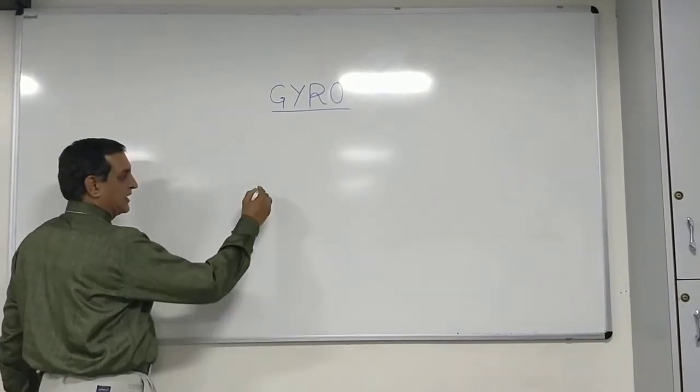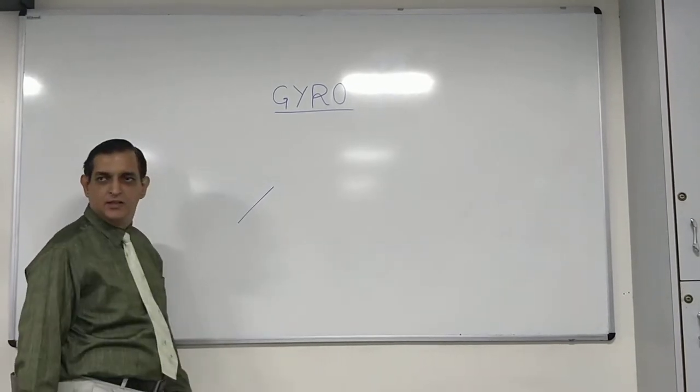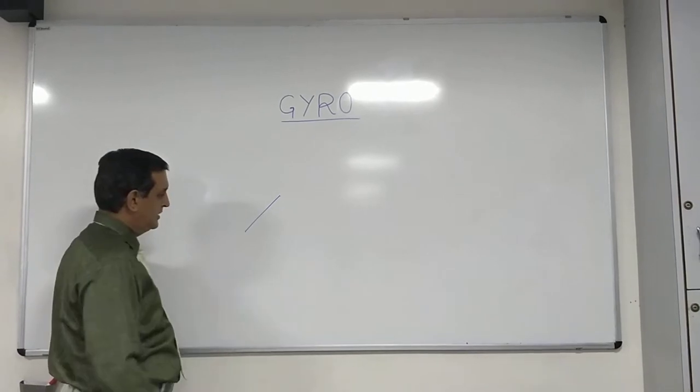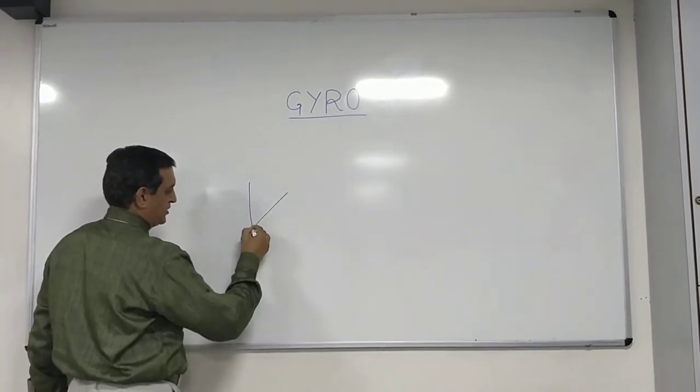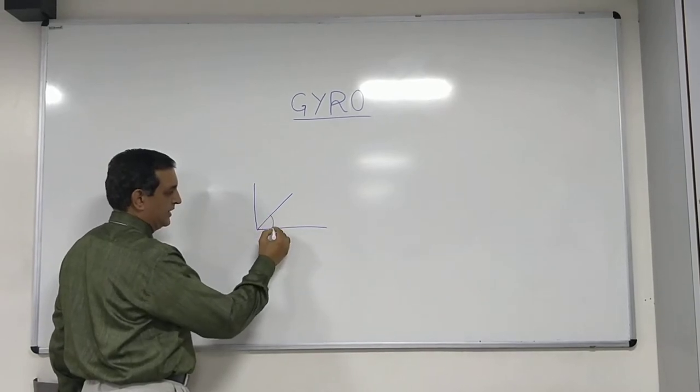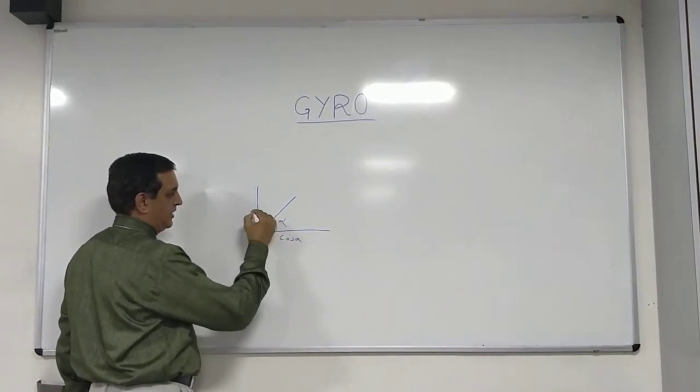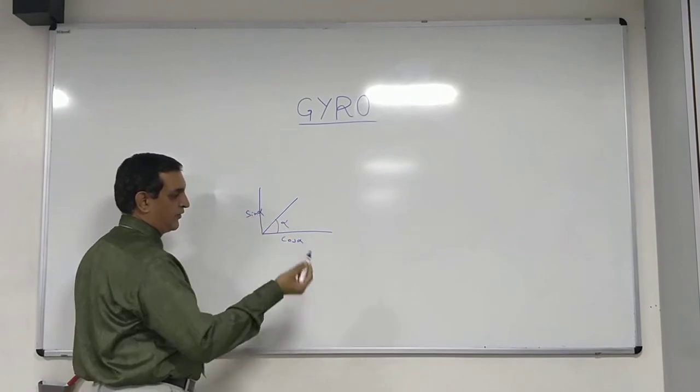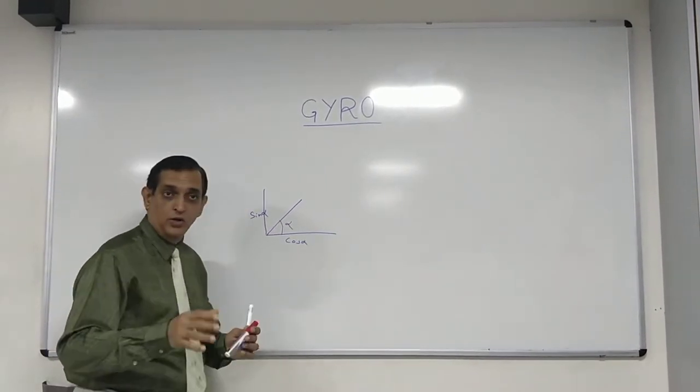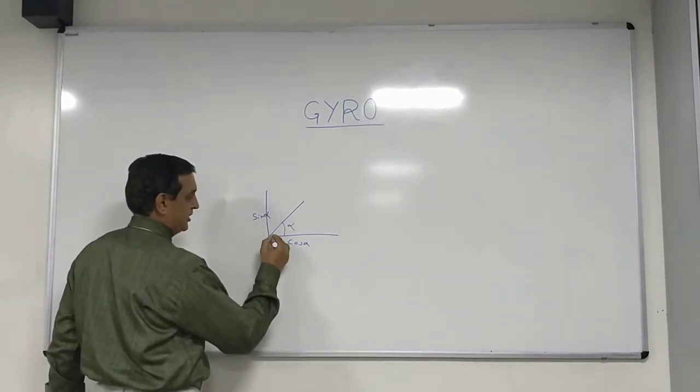If I have any vector, let's say I have a vector here like this. If I want to resolve this vector here, I can have two directions, one here, one here. And depending on this angle, if this is alpha, I will have cos alpha here and sine alpha here, right?